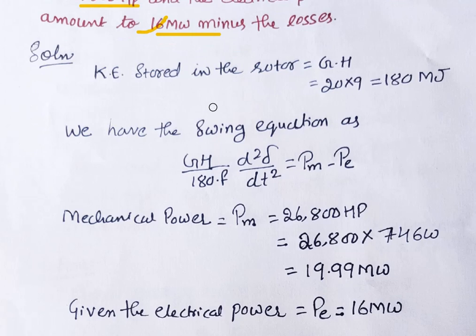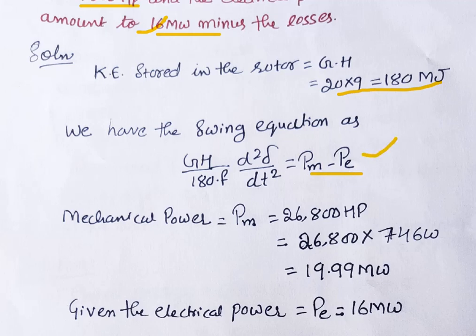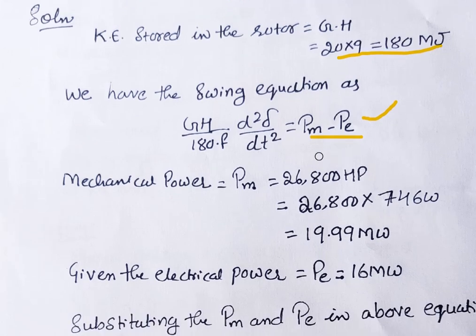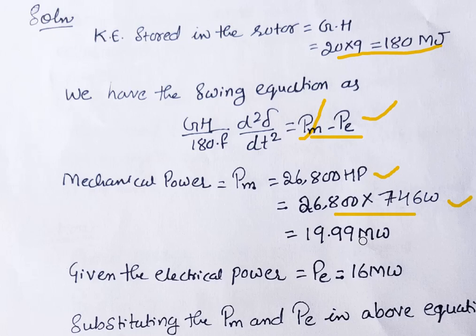The kinetic energy stored in the rotor equals G·H = 20 × 9 = 180 megajoules. Using the swing equation: (G·H / 180f) × (d²δ/dt²) = P_M − P_E. The electrical power P_E = 16 MW is given directly. Convert mechanical power: 26,800 HP × 746 W/HP ÷ 10⁶ = 19.99 MW ≈ 20 MW.